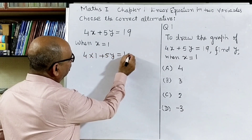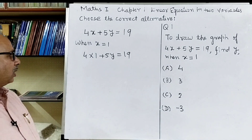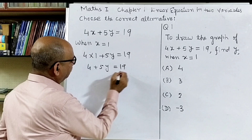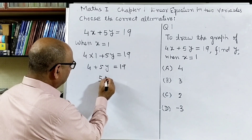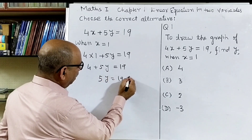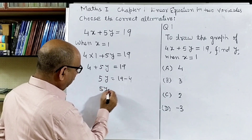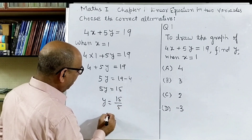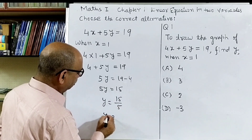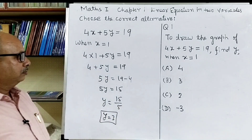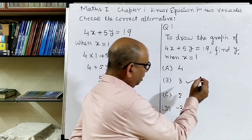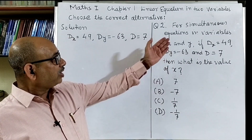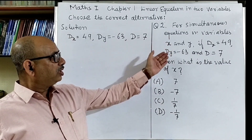That means 4 plus 5y is equal to 19. So 5y is equal to 19 minus 4, that is 5y is equal to 15. Therefore y is equal to 15 by 5, or y is equal to 3. Option B is the correct one.